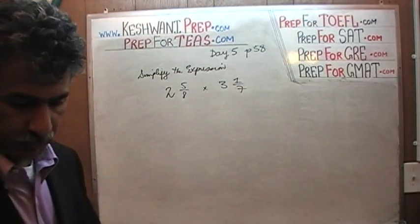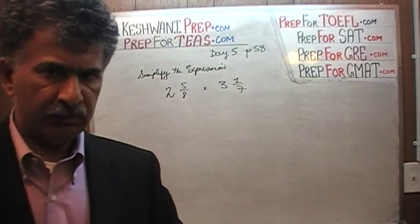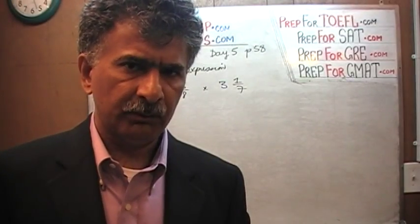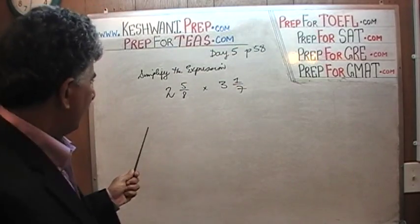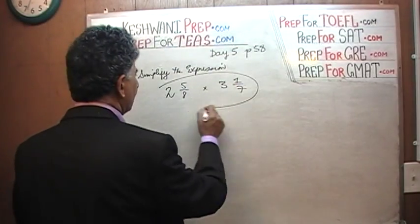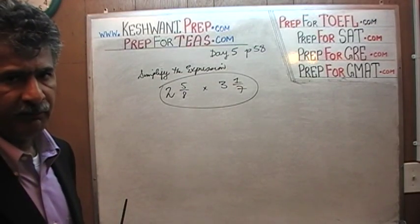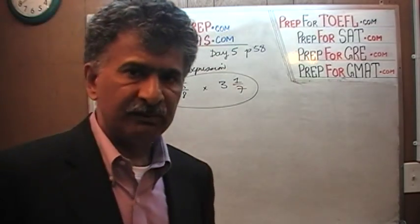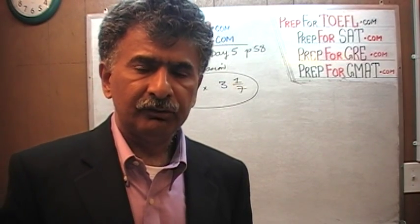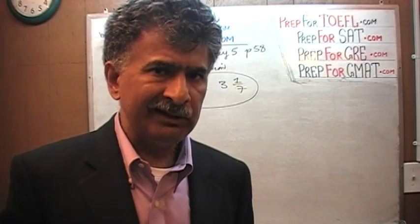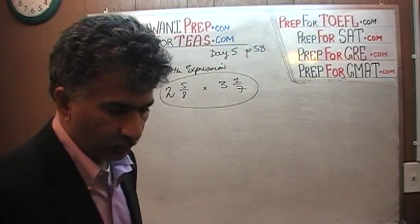We talked about this before — I believe it was day number 1. The very first thing we talked about was why this one is called an expression. A lot of the times I hear people referring to this as an equation. It is an expression as opposed to an equation because an equation contains an equal sign. This thing has no equal sign in it — it is called an expression.